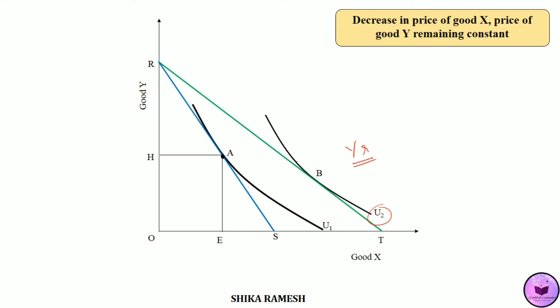At the new equilibrium point B, the consumer purchases OG amount of good X and OI amount of good Y. The consumer is purchasing EG amount of additional units of good X while giving up HI amount of good Y, because of the decrease in the price of good X, the price of good Y remaining the same.